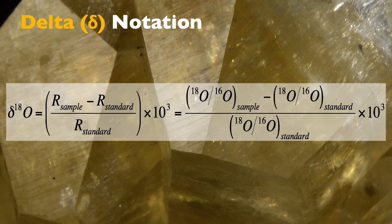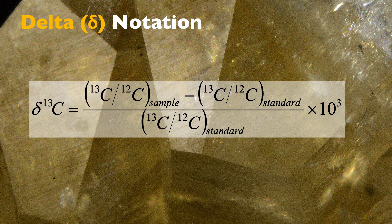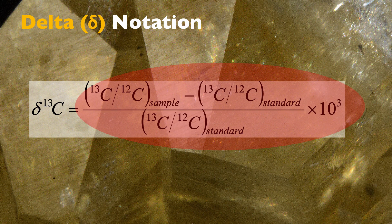For carbon isotopes, we do exactly the same — we also use the delta notation. The heavy, rare isotope of carbon is C13. The light, more common isotope — 98–99% of carbon — is C12. The ratio is exactly the same: (C13/C12 of sample) minus (C13/C12 of standard), divided by (C13/C12 of standard), times 1000.